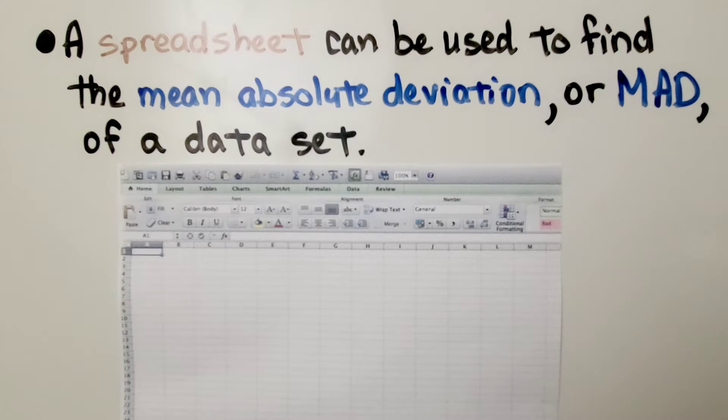A spreadsheet can be used to find the Mean Absolute Deviation, or MAD, of a data set.